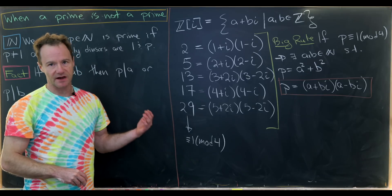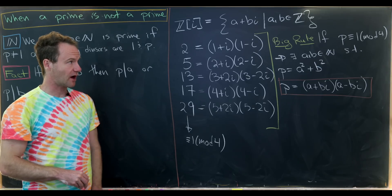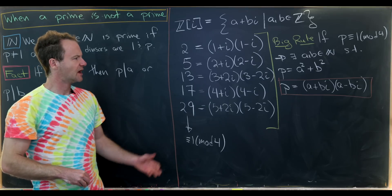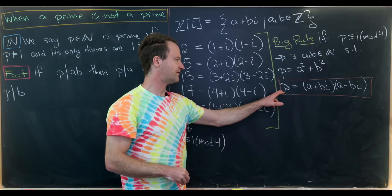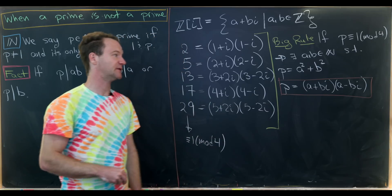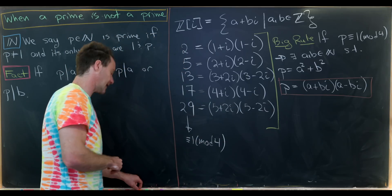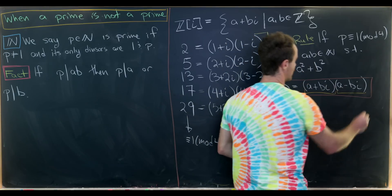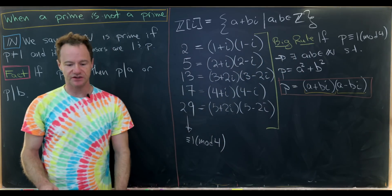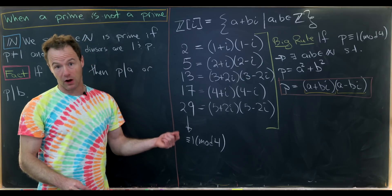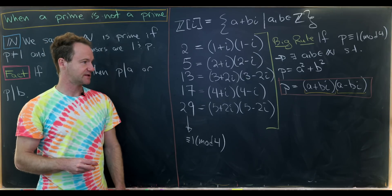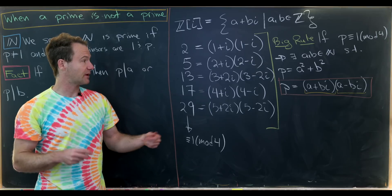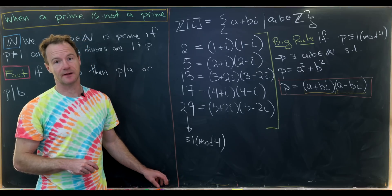Primes that are 3 mod 4 remain primes in the Gaussian integers. You might ask about the component factors — whether a + bi and a − bi are themselves primes within the Gaussian integers. They are most of the time, and we can perhaps prove that in an upcoming video. Post in the comments if you'd like to see that.